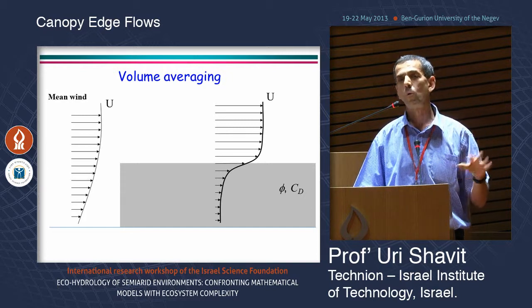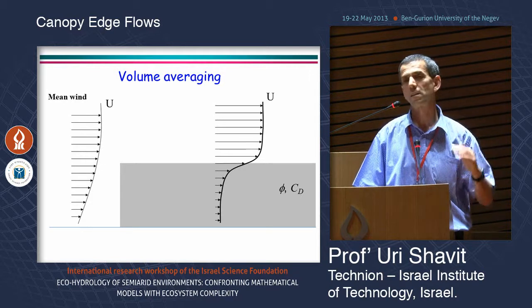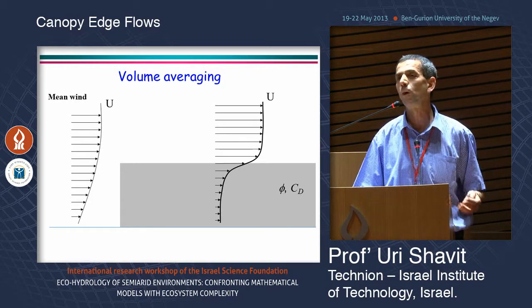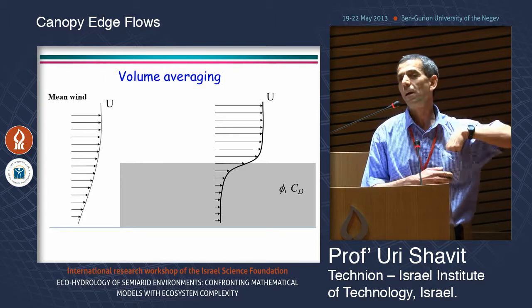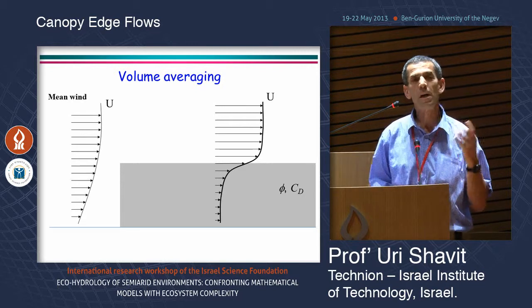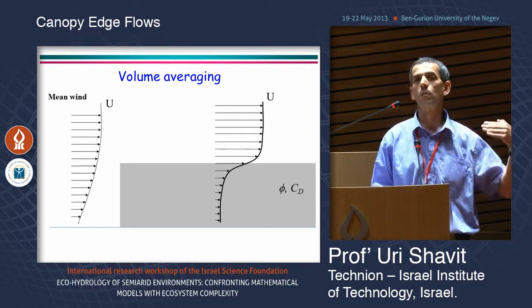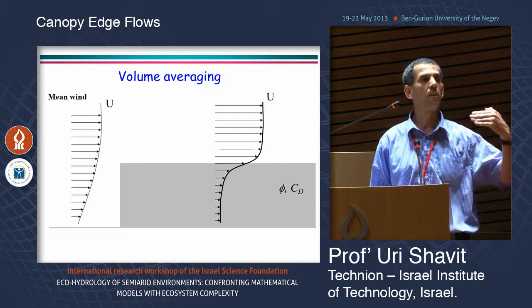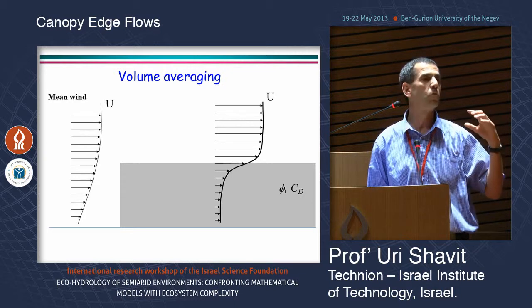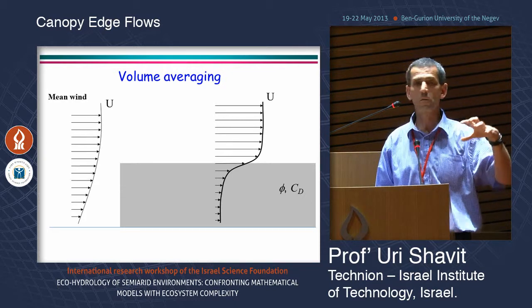We have been working for a few years on different interfaces. At the beginning we worked on the upper interface, applying laminar flow regime, and we were brave enough to move into the turbulent flow regime. Today I'll focus only on the entrance edge — when the flow approaches a canopy, it could be a single coral colony, a single forest patch, or a shrub.